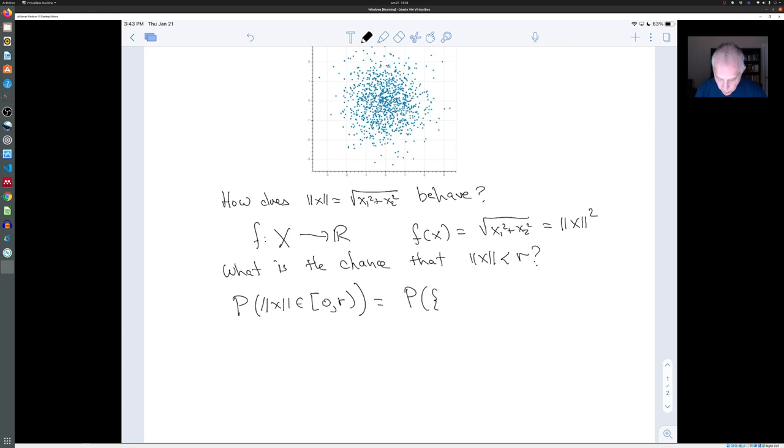Now, that means we need to apply the definition of this probability. This is the probability of the set of (X1, X2) such that the norm of that vector is less than R and bigger than or equal to 0, which is automatic. But we know how to compute this probability. This is the integral. It's 1 over 2π times the integral over the set norm(X1, X2) less than R of e to the minus norm X² over 2 dx1 dx2. Because that's how the probability distribution function works. The chance that X1, X2 lands in this circle is the integral over that circle of the probability density function.